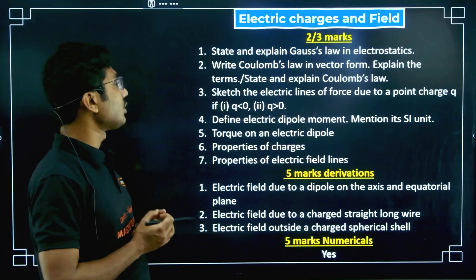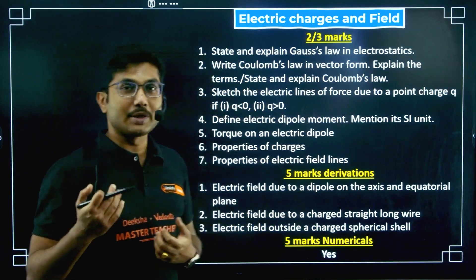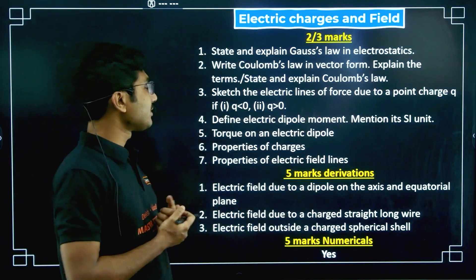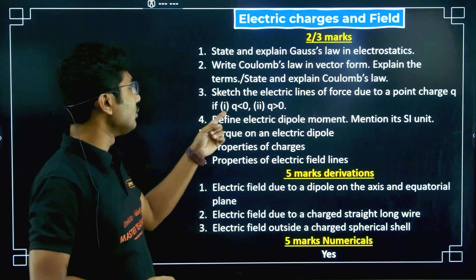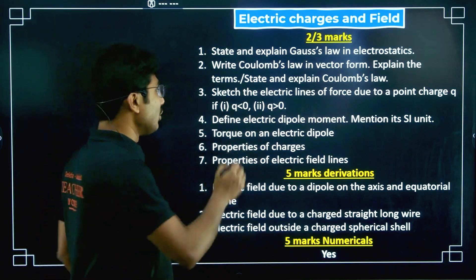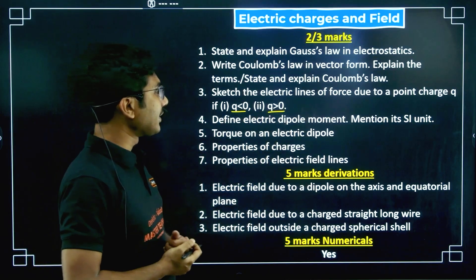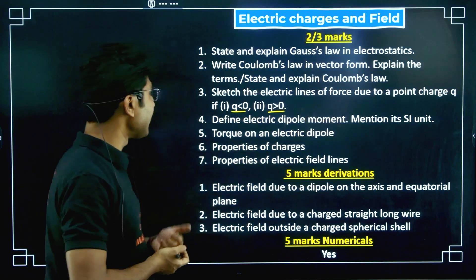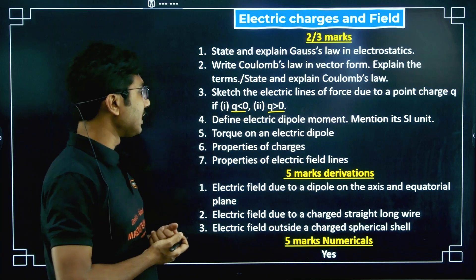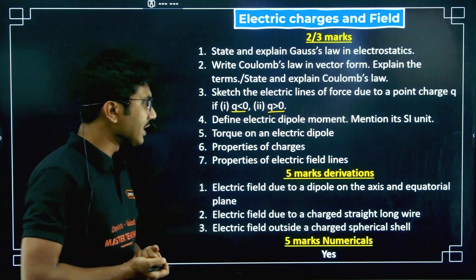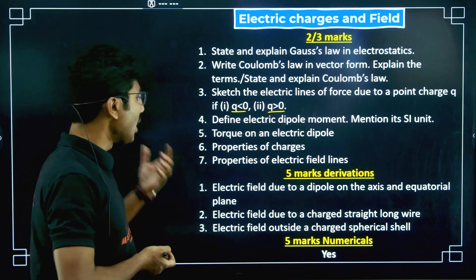Explain the terms, or state and explain Coulomb's law — both are possible questions. Sketch the electric field lines for a point charge for q less than 0 and q greater than 0 — that is, negative charge and positive charge respectively. Define electric dipole moment and mention its SI unit. Torque on an electric dipole, properties of electric charges, and properties of electric field lines are also important.